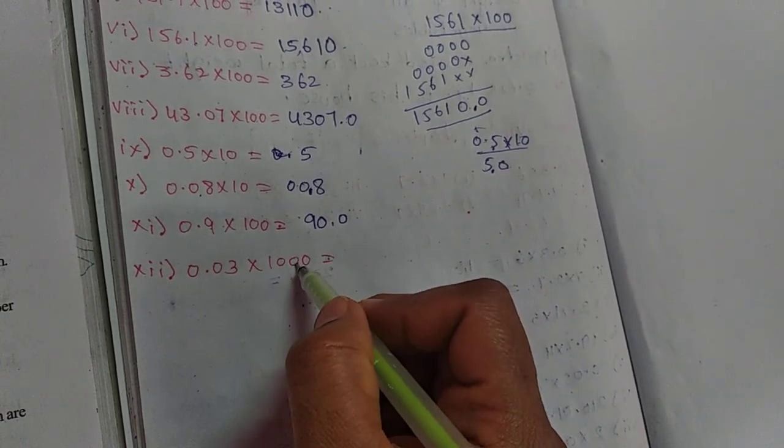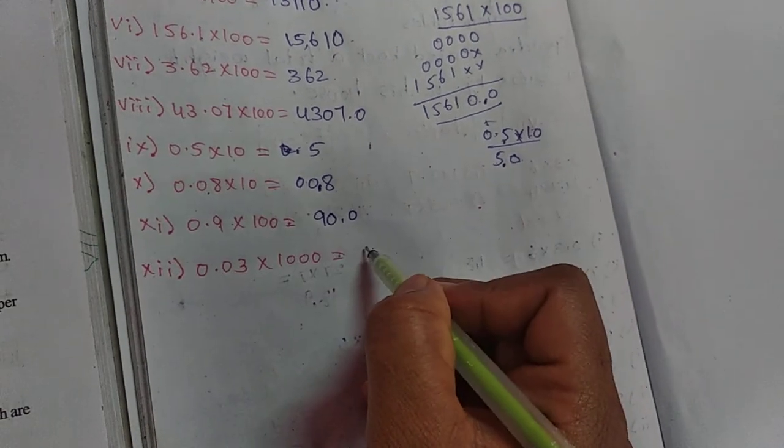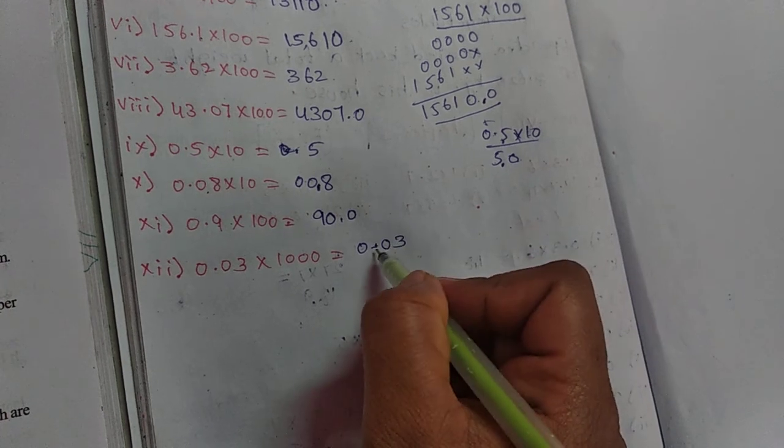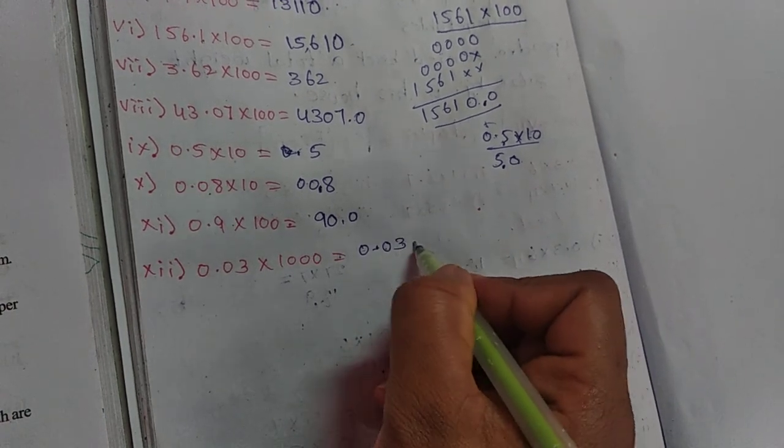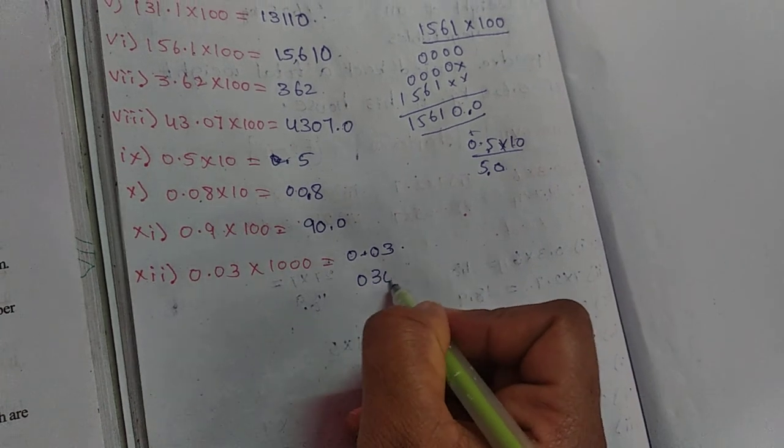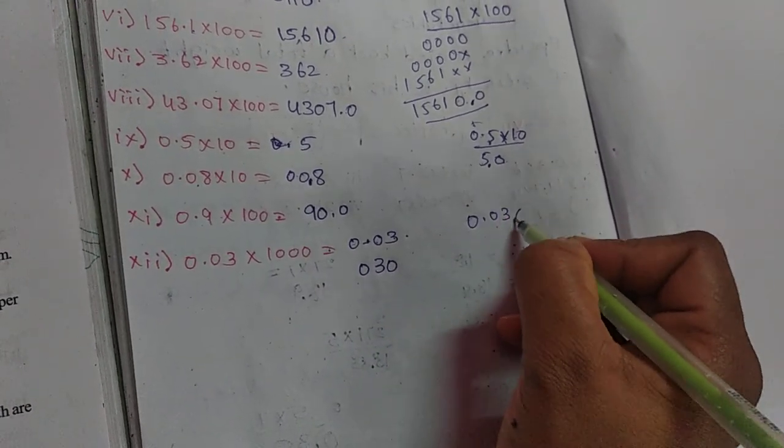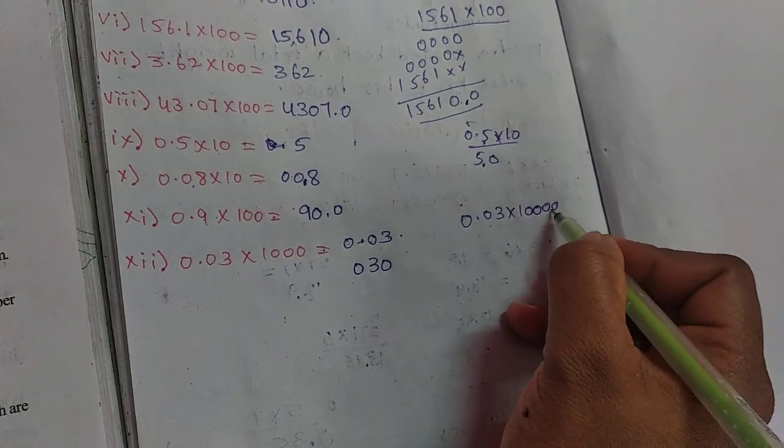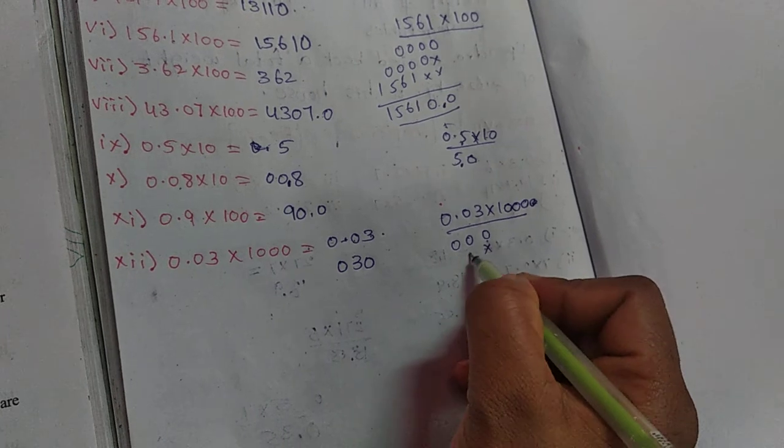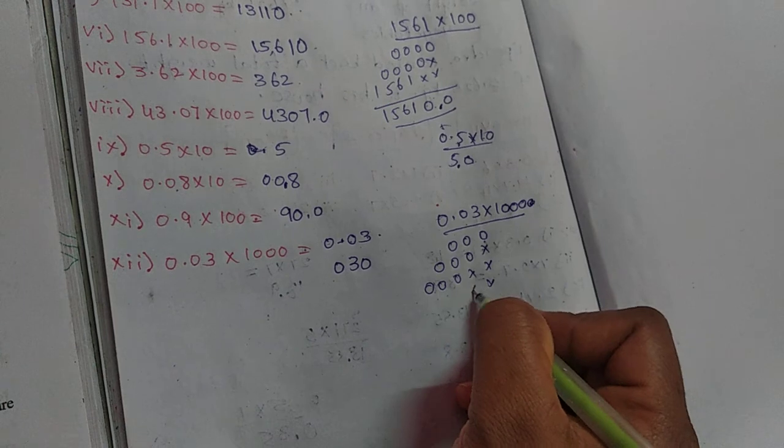0.03 into 1000. With 1000, we have 3 digits to move. 3 digits, so here count 1, 2, 3. Here there's no number, so write 0. The answer is 30. If you do normal multiplication with 1000, 3 zeros in multiplication. Next, multiply by 1.